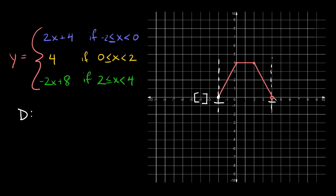And if there's an open circle, like on this side, you use parentheses. So to write the domain, it goes from negative two to positive four. Negative two has a closed circle so we use a bracket, and four has an open circle so we use a parenthesis. That would be the domain for this graph.